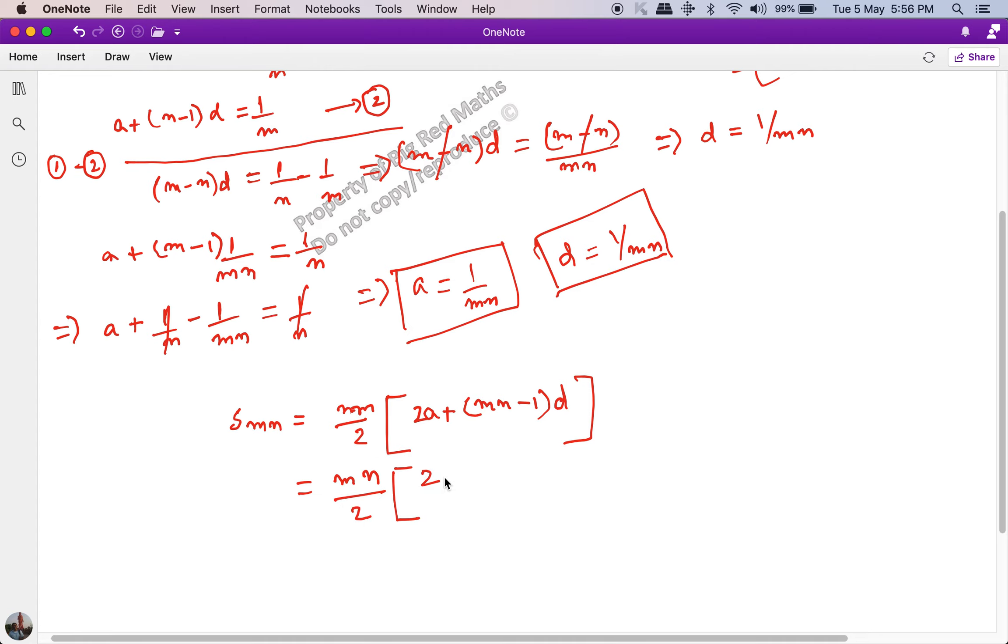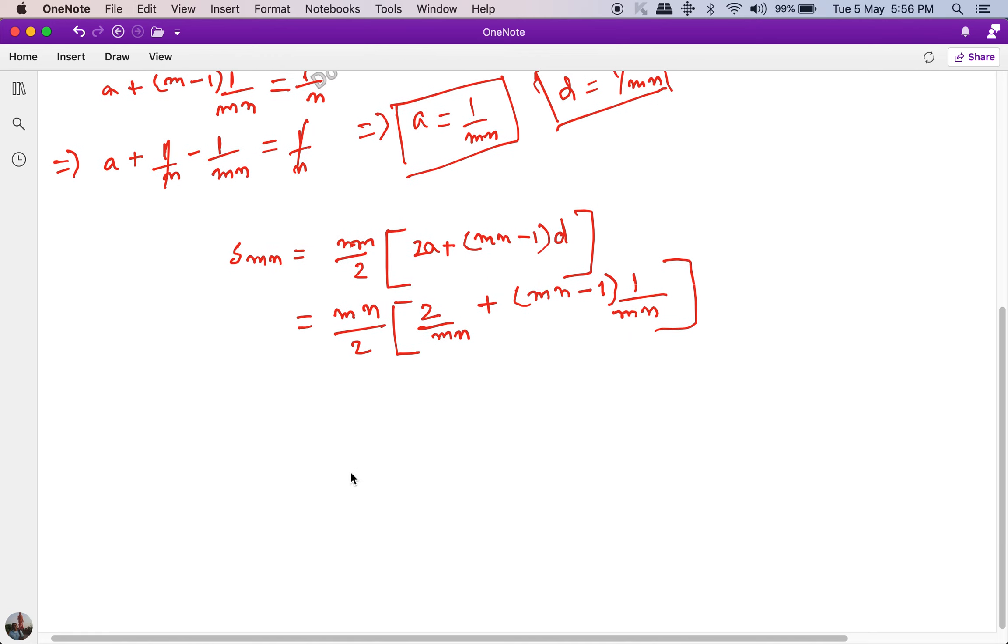2 of a is 2 upon m multiplied by n, plus (mn minus 1) multiplied by 1 upon mn. If I take 1 upon mn common, this 1 upon mn will get cancelled.